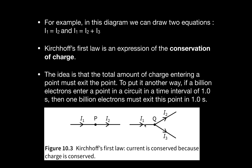At point Q, the total current entering is I1, which equals the total current leaving, which is I2 plus I3. Kirchhoff's first law is an expression of the conservation of charge. Current is the rate of flow of charge, so if there are one billion electrons entering a point, there should also be one billion electrons exiting that point in the same interval of time.